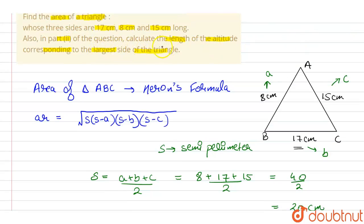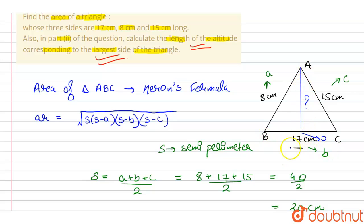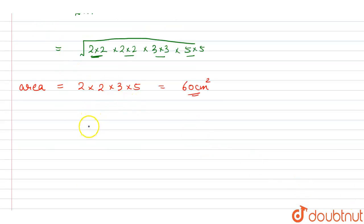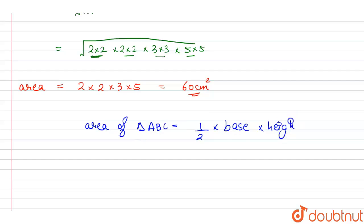Now, we need to find the length of the altitude corresponding to the largest side. The largest side is BC, which is 17 cm. So we need to find the altitude AD, where D is the foot of the altitude on BC. We also know that the area of a triangle can be written as half times base times height.